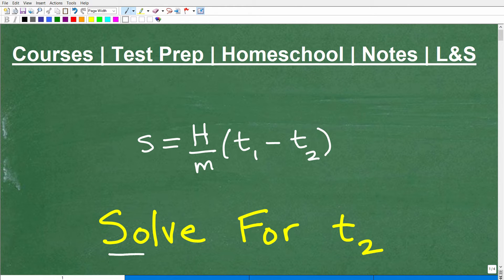Okay, let's go ahead and solve for T2. So here I have some sort of equation or formula, and that is S equals H over M times T1 minus T2. And what the question is saying is, go ahead and rewrite this equation or formula in terms of T2.